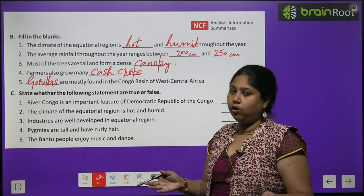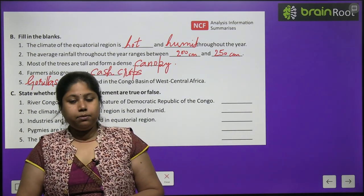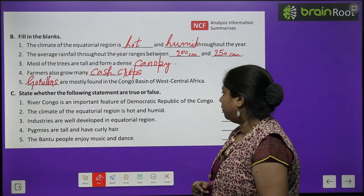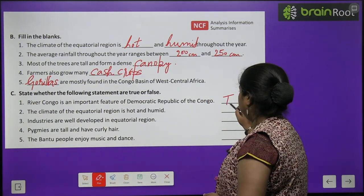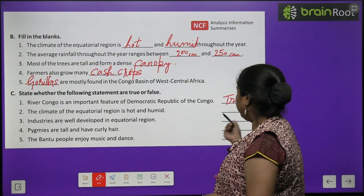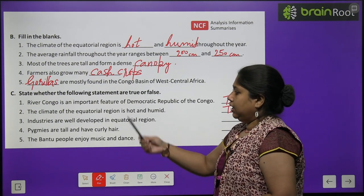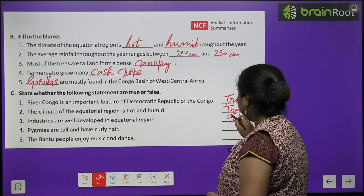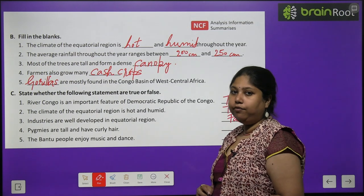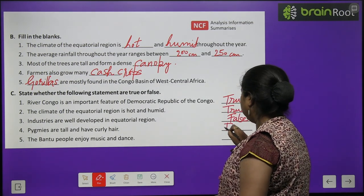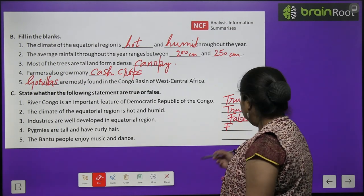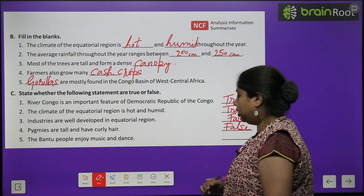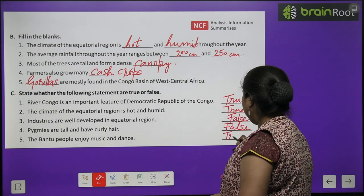Now let's do the true or false exercise. First: River Congo is an important feature of Democratic Republic of the Congo — True. Second: the climate of equatorial region is hot and humid — True. Third: industries are well developed in equatorial region — False, there are very few industries here. Fourth: pygmies are tall and have curly hair — False, it is the Bantu people who are tall; pygmies are not. Fifth: the Bantu people enjoy music and dance — True.